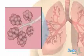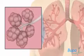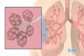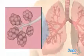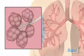In healthy lungs, the bronchi and alveoli expand and relax, allowing oxygen to be taken into the body.